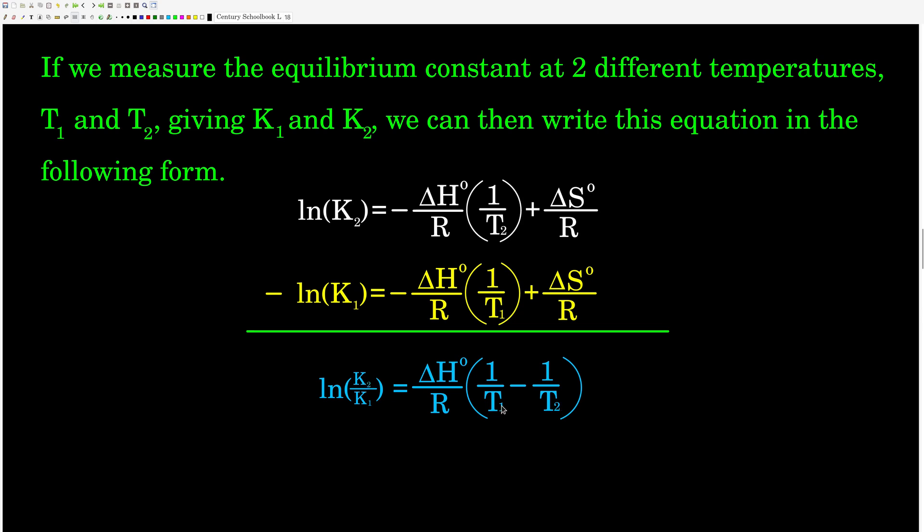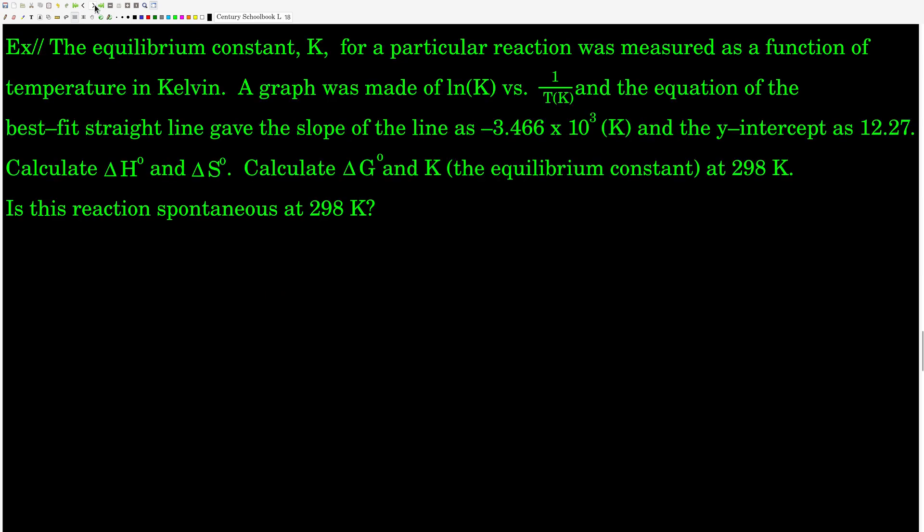But we get equals ΔH° over R times 1 over T1 minus 1 over T2. Two's on the top here, one's first here. So you know, if we have two points, we can use this equation.